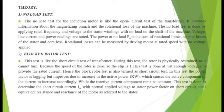The blocked rotor test is like the short circuit test of a transformer. During this test, the rotor is physically restrained so it cannot turn; because the speed of the rotor is zero, the slip is one. This test is done at just enough voltage to provide the rated current, hence it is also termed the short circuit test. The power factor is lagging but improves due to the increase in active power, which causes the active component of current to increase while the reactive current component remains constant. This test determines the short circuit current, power factor on short circuit, and total equivalent resistance and reactance of the motor referred to the stator.